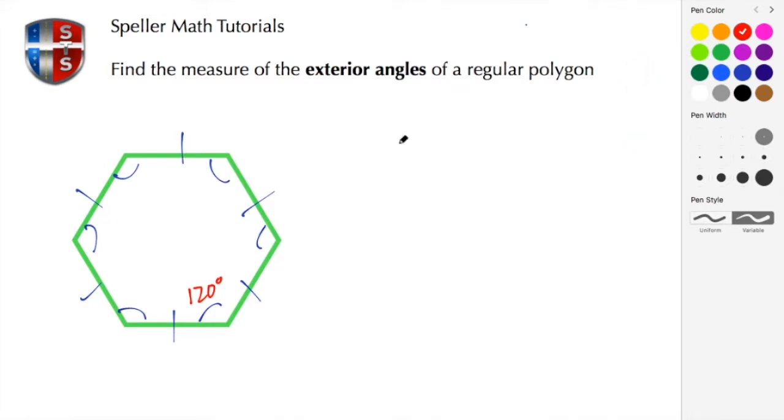Next, let's go ahead and draw in each of the exterior angles. So we're going to have six of those. So let's go ahead and put those in place. Here's number two, three, four, five, and number six.